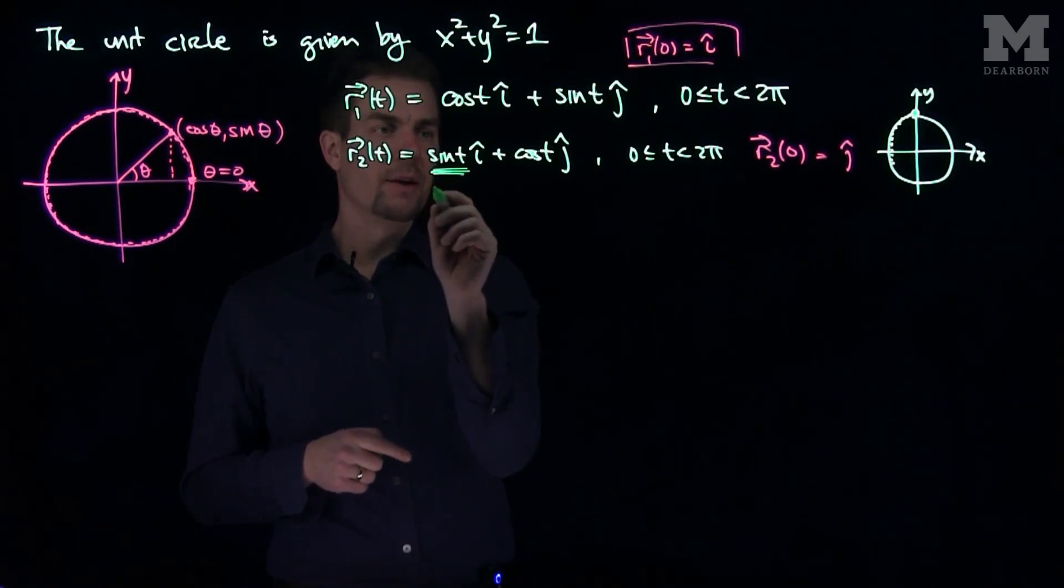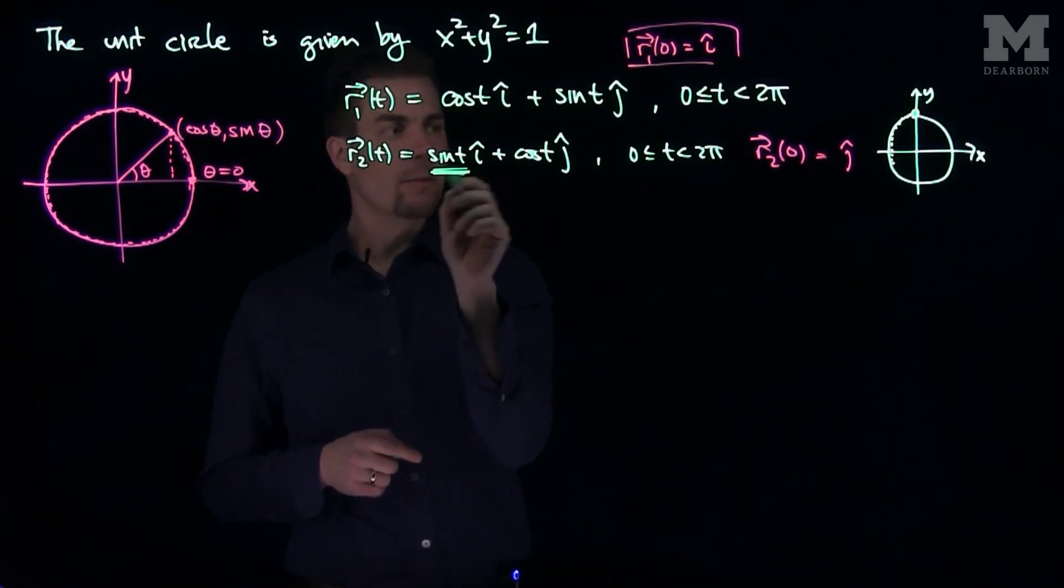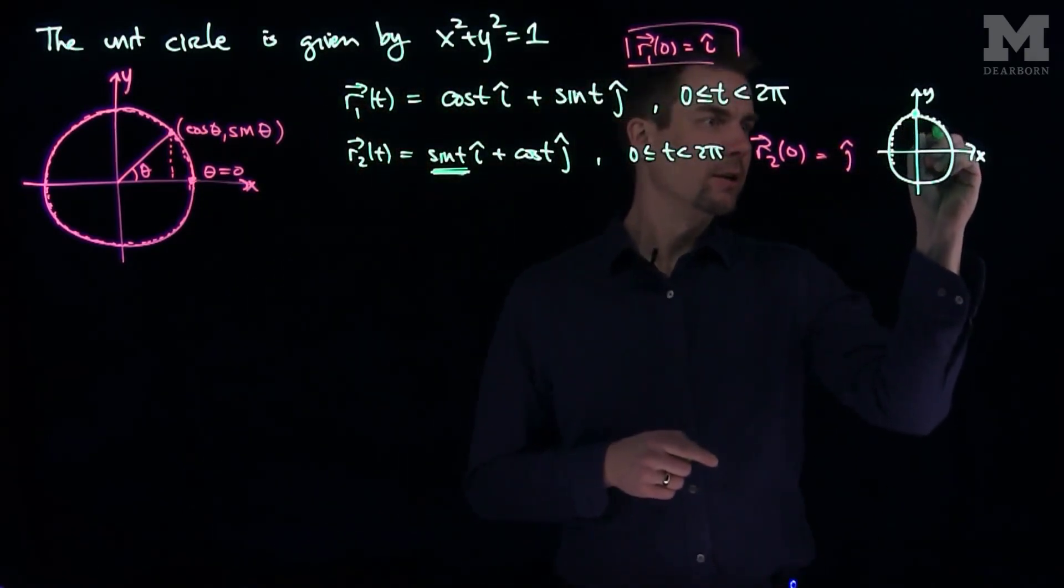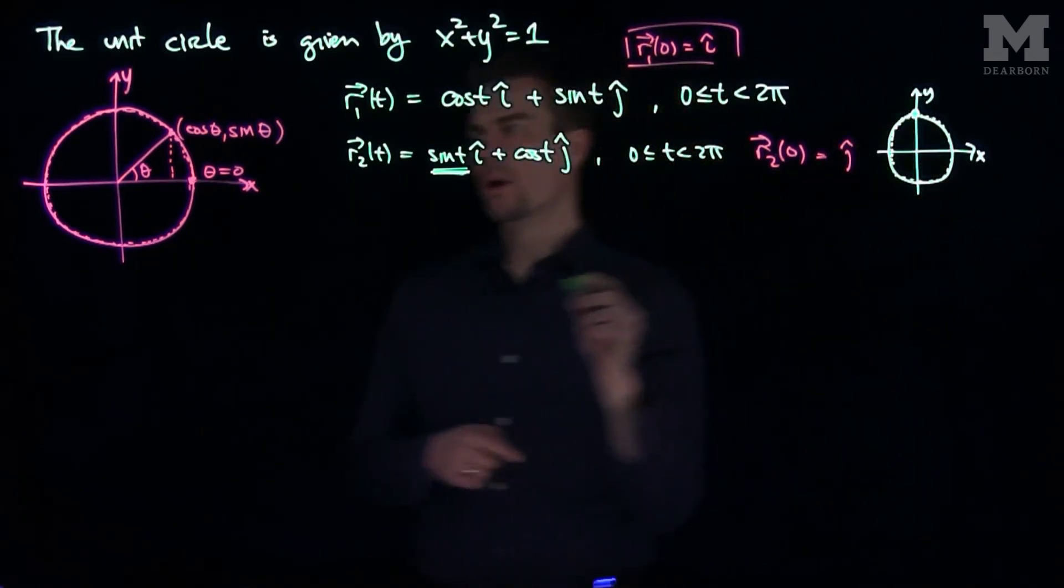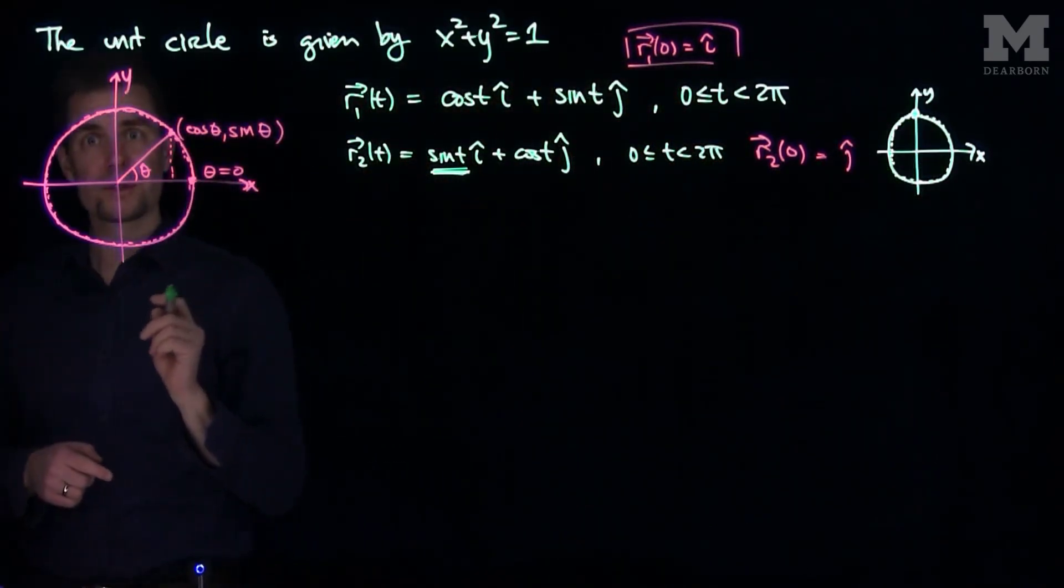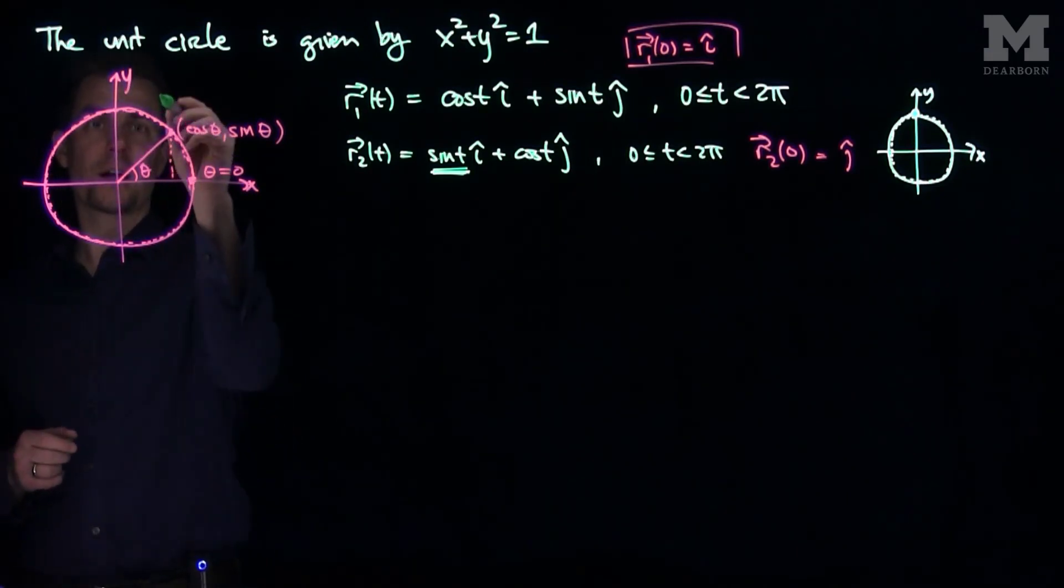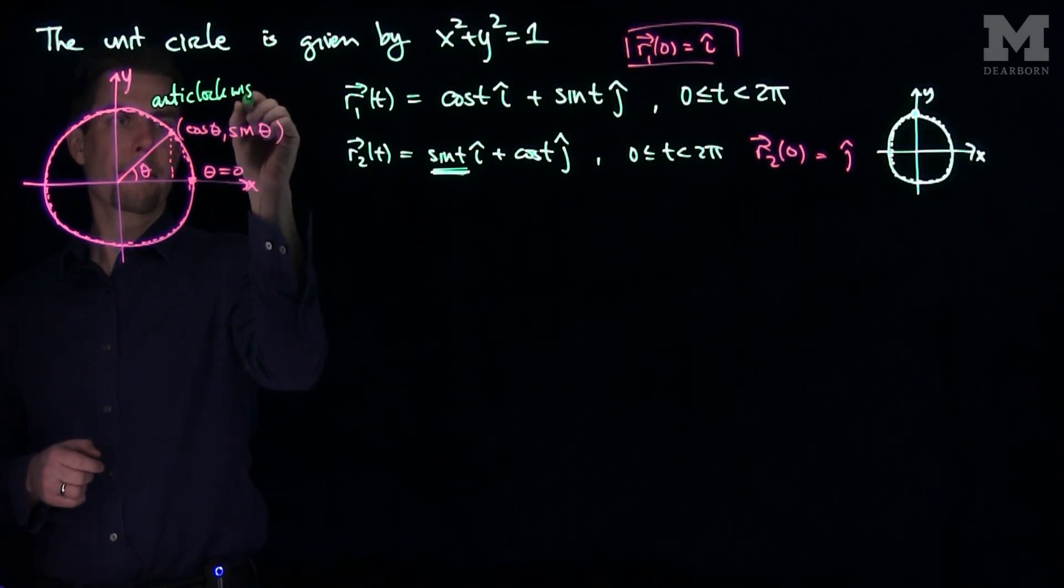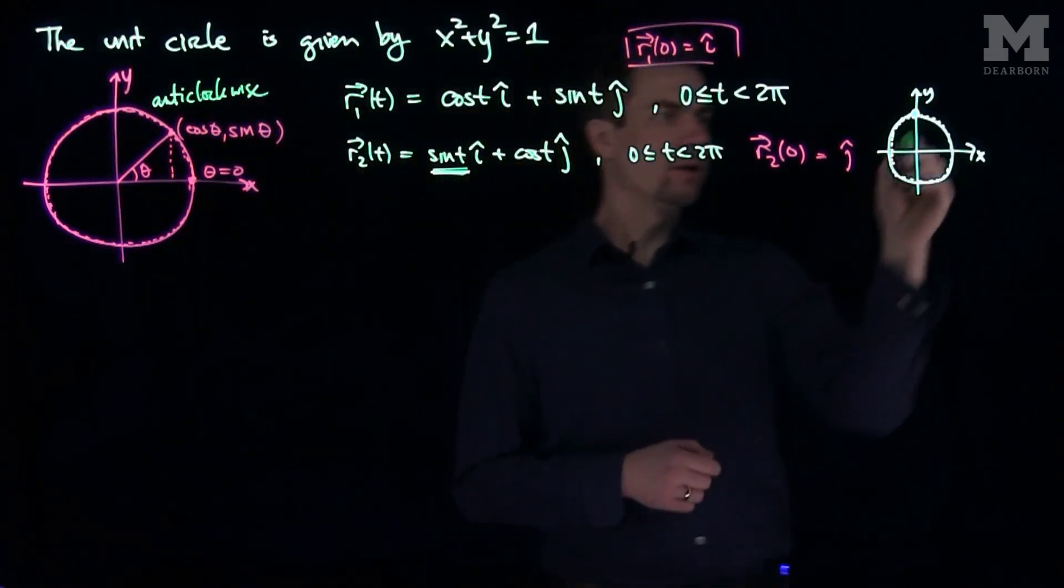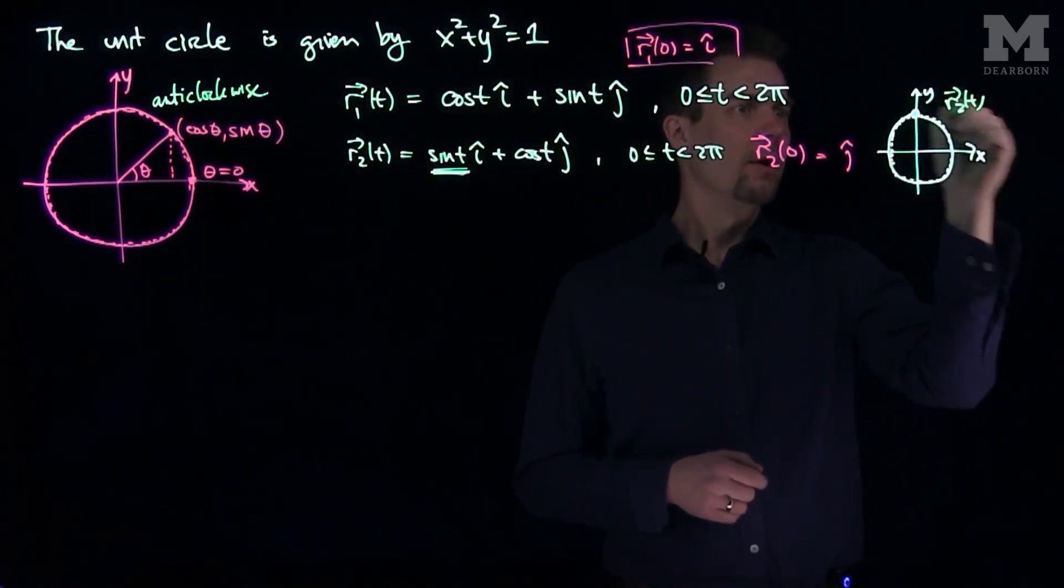If I start to plug in bigger values of t, the sine will be positive, so I'll go this direction, I'll go clockwise. Whereas this curve over here goes counterclockwise, or anticlockwise, so this curve over here is anticlockwise, and this curve over here, this r2 curve, will be clockwise.